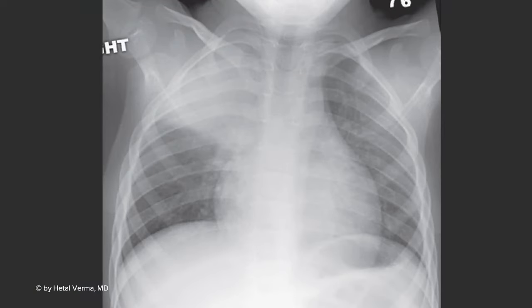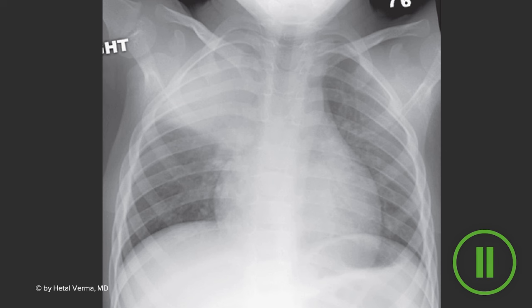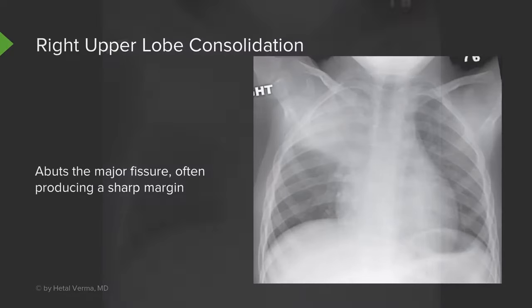Looking at this frontal chest x-ray, this is an example of right upper lobe consolidation. The consolidation abuts the major fissure, which produces a sharp margin inferiorly, and it involves the entire right upper lobe. You can also see that it silhouettes the mediastinum on the right.